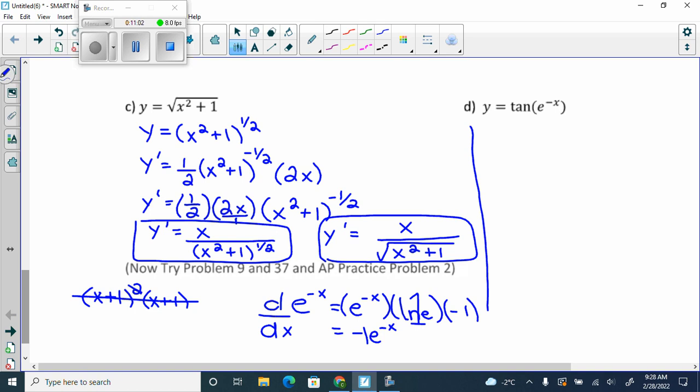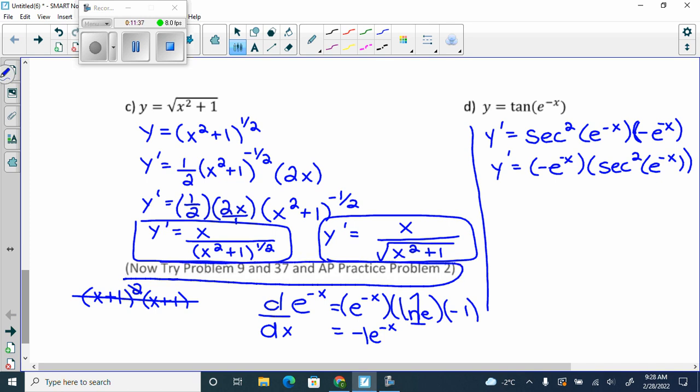So we have to do the outside first. The derivative of tan is secant squared X. So we get secant squared X. And then the derivative of E to the X is negative E to the X, which is completely correct, but like I said, they often rewrite that at the front, and I don't know why. It's just formatting. And there's the now tries. Okay.